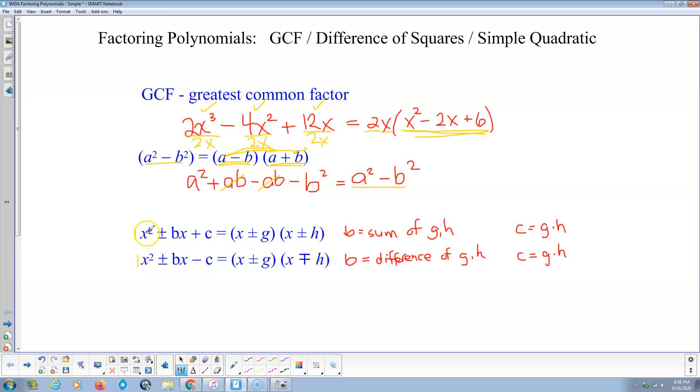Here's how this works. X times X makes X squared. X times H and G times X makes HX plus GX. So B is the sum of G and H. If G and H are both positive, B is positive. If both negative, B is negative. And G times H is always what C is.